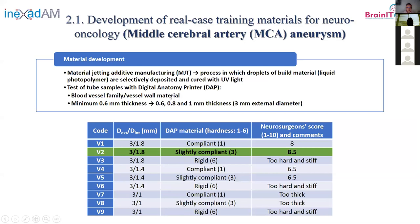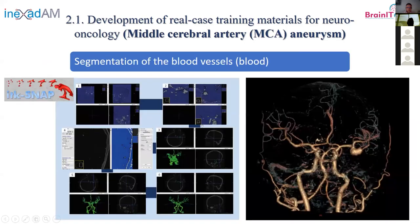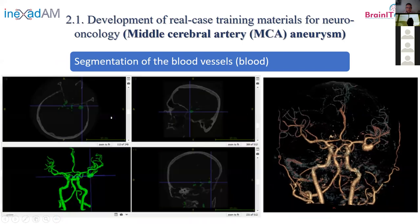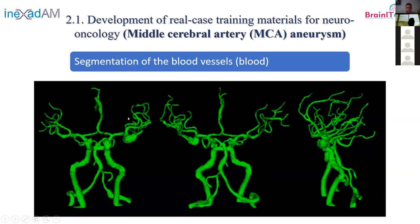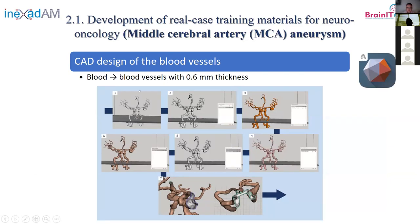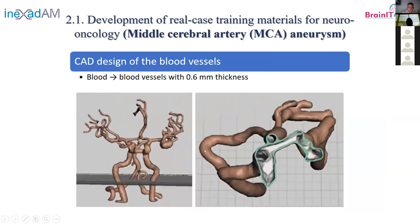With that combination, we did segmentation from the available images using the ITK-SNAP software. We had only a static picture as reference because from that imaging we could not directly obtain a 3D model, so we had to redo the segmentation. The segmentation process focuses on the blood — you obtain the blood volume, not the vessels themselves. After that, we used MeshMixer software to add the 0.6 mm thickness and create the hollow vessel wall.